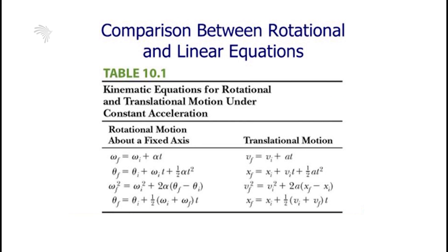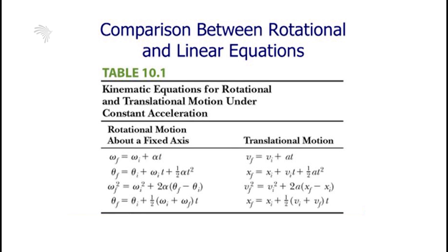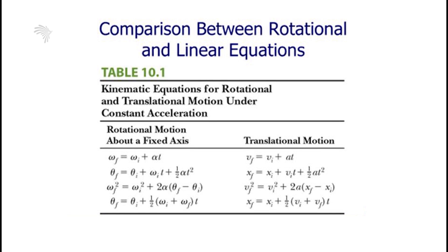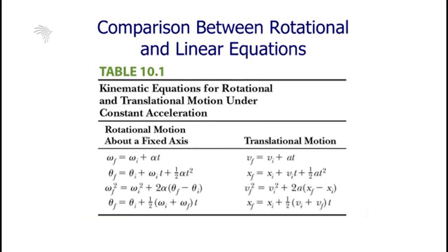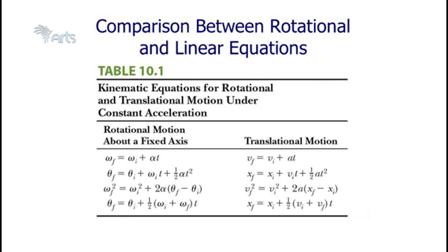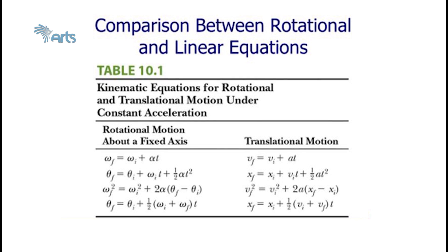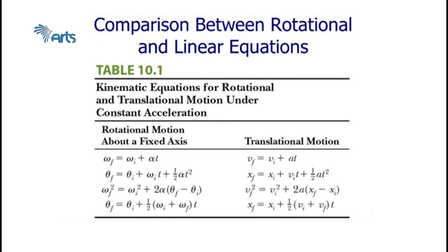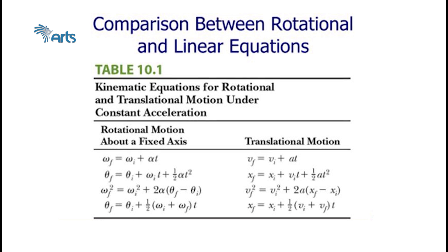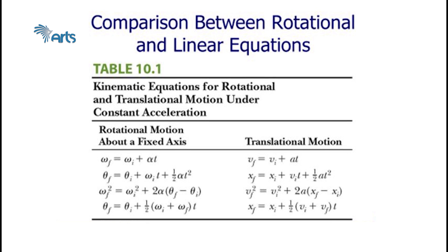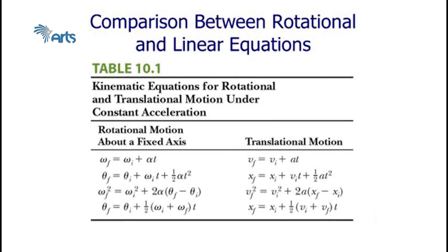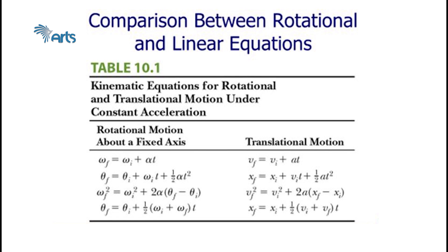Looking at the comparison between rotational and linear equations on the screen: for translational motion, v_final equals v_initial plus at. Replacing v with omega and a with alpha gives the rotational equation: omega_final equals omega_initial plus alpha·t. Similarly, by substituting the other variables, you can derive all corresponding equations for angular motion.